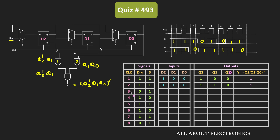During the third clock pulse, S input is equal to 1 again, so the D2 input is equal to DIN. During the third clock pulse, the value of DIN is equal to 0. So D2 becomes 0, while D1 and D0 get their inputs from the previous stage — Q2 goes to D1 and Q1 goes to D0. That means the inputs D2, D1 and D0 are 0, 1, 1. Just after the clock pulse, outputs Q2, Q1 and Q0 are also 0, 1, 1. Based on these flip-flop outputs, Y will become 0.